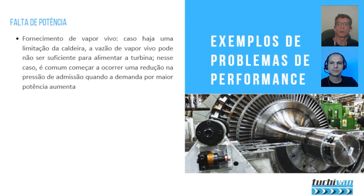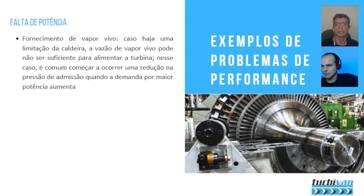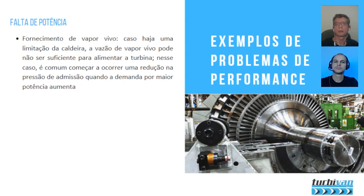Another common problem is with the steam supply. When the machine reaches nominal power, you expect live steam pressure to remain stable. If pressure begins to drop as the machine approaches rated power, it indicates the boiler is at its limit — it can no longer maintain the design pressure at that flow. This could indicate a design problem: the boiler was purchased at the limit of its supply capacity, or a boiler previously sized for a different turbine was repurposed without adequate reassessment.